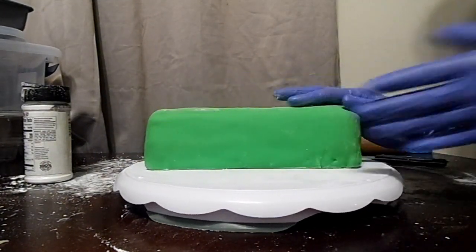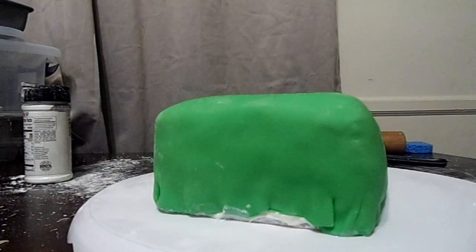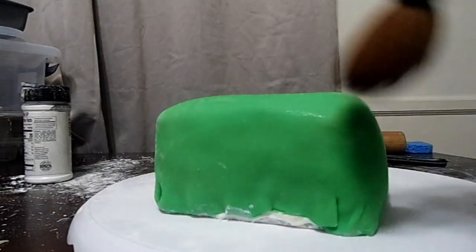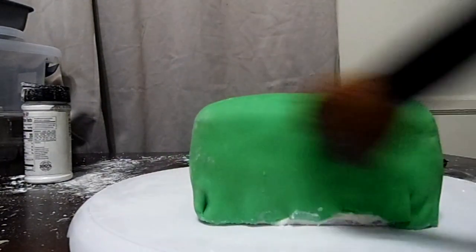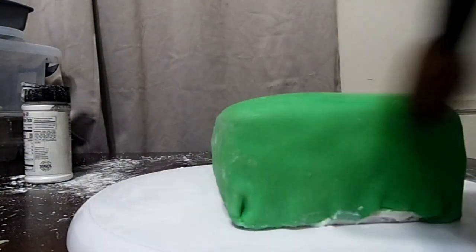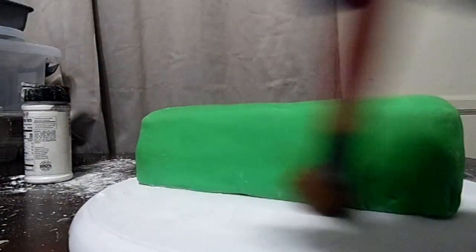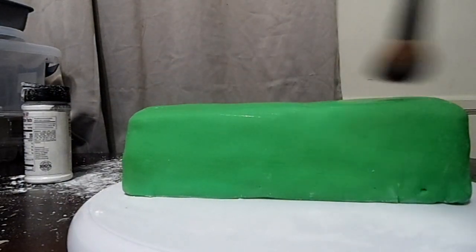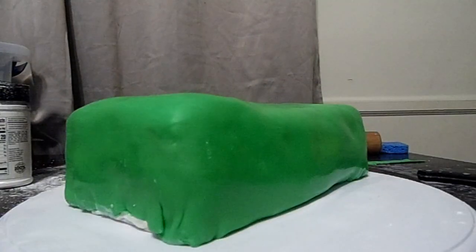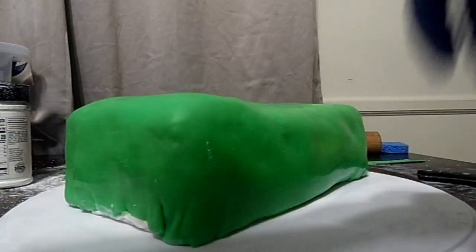Try and keep that square shape as much as you can. So now you can use a paintbrush, make sure your paintbrush is damp, not too wet. You just go around and dust off all that excess powdered sugar. So once you dust off that excess powdered sugar you're gonna have this semi shiny look.